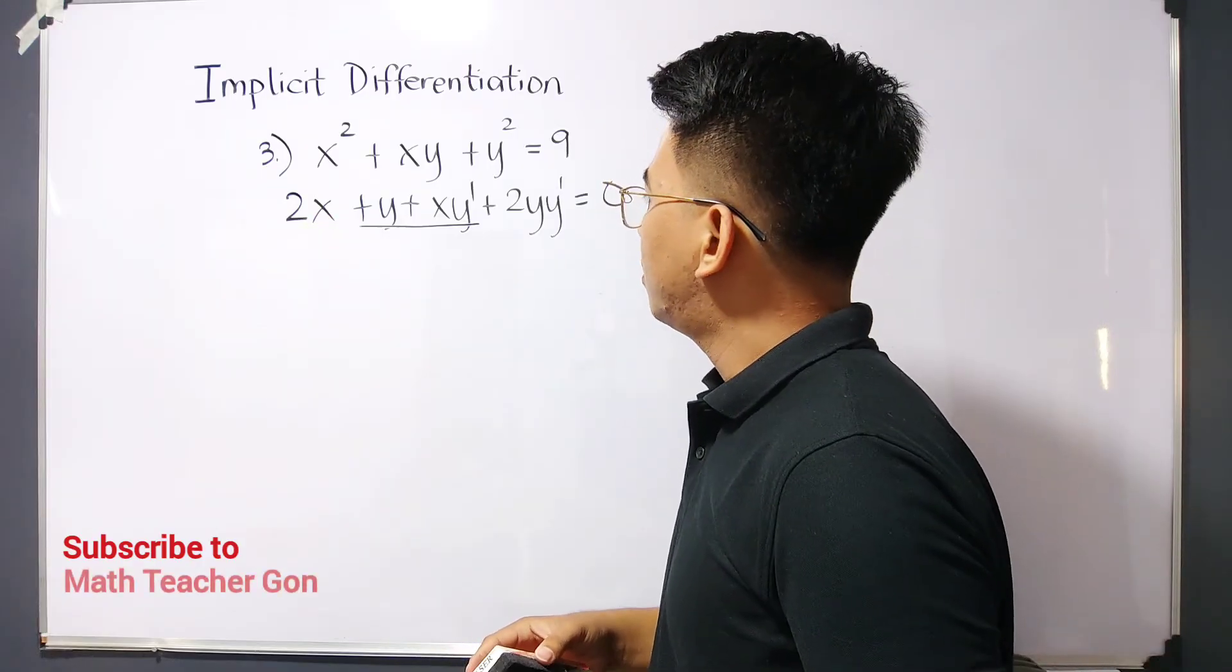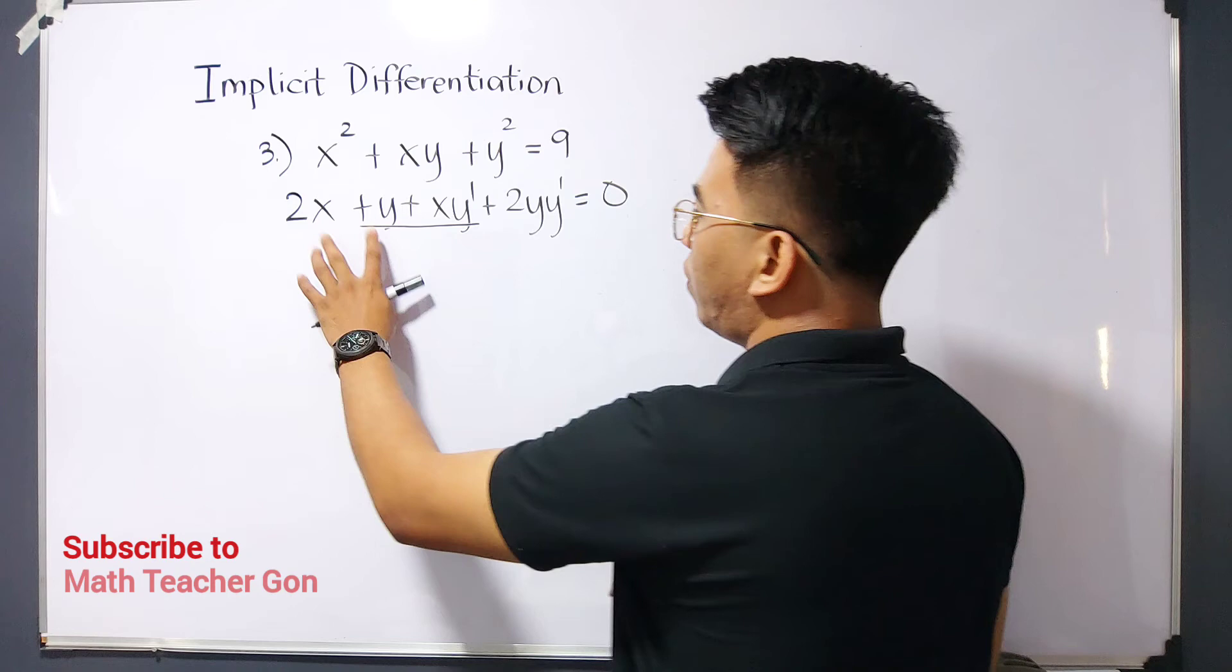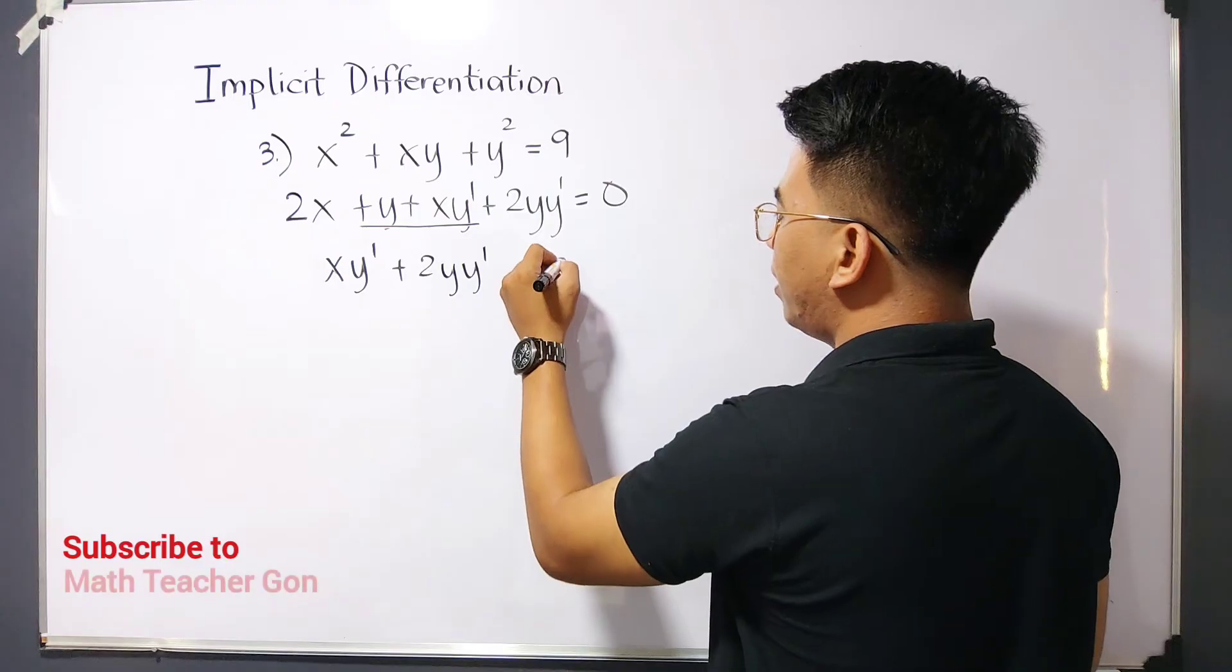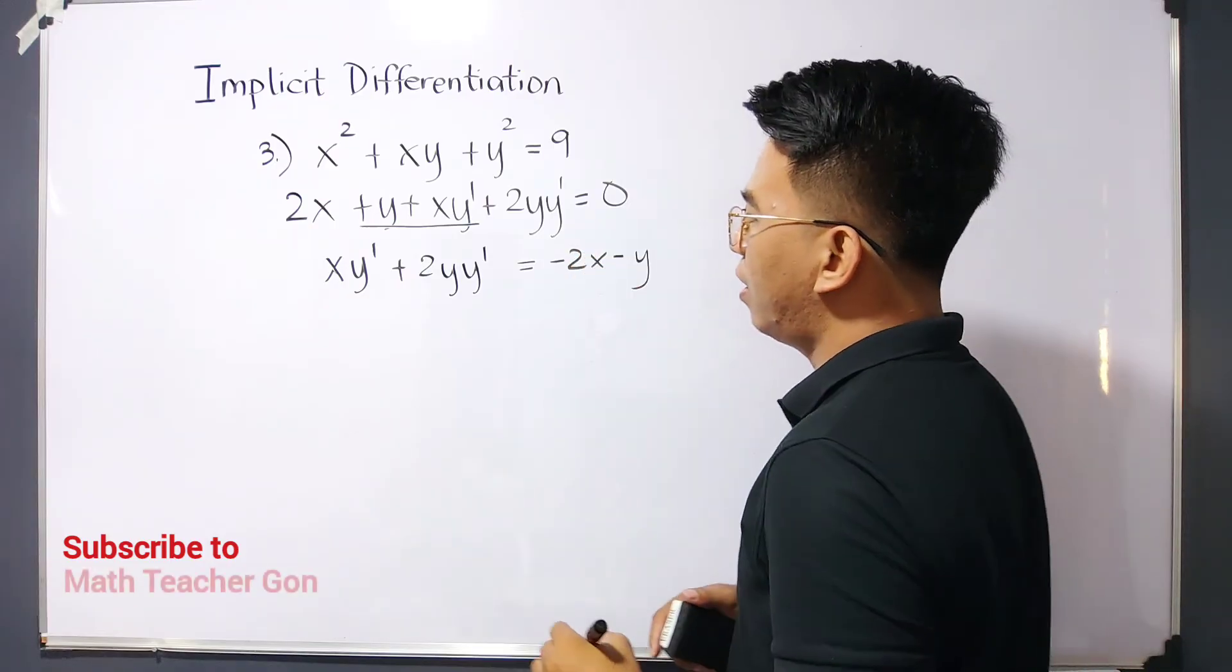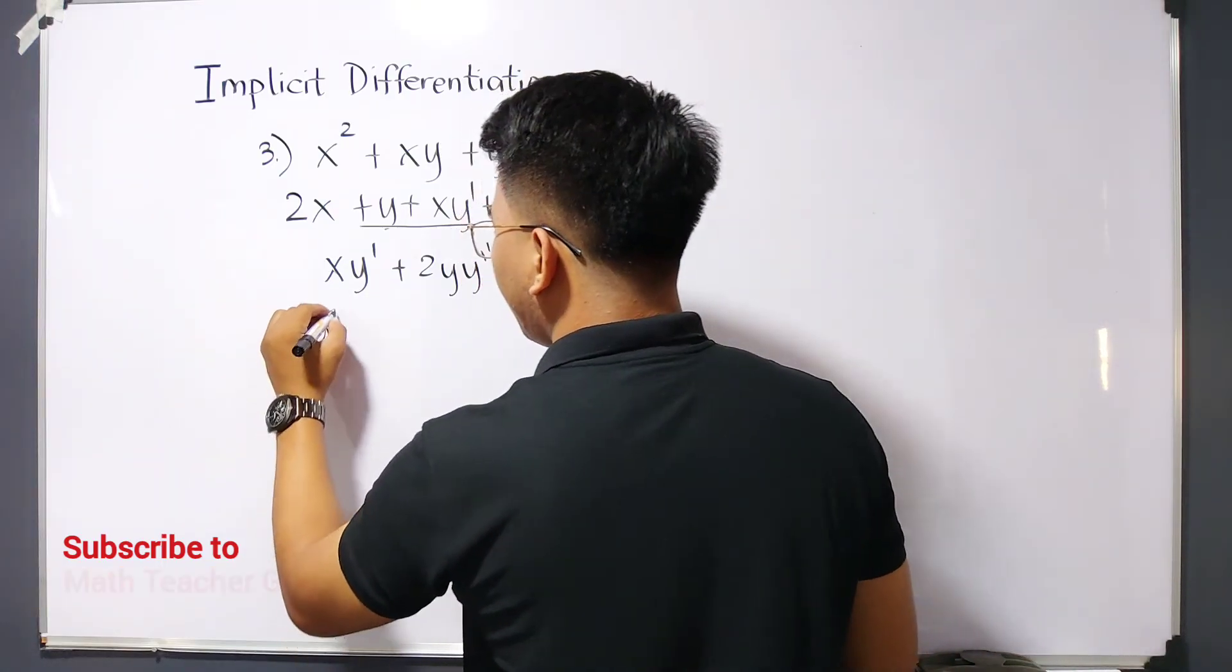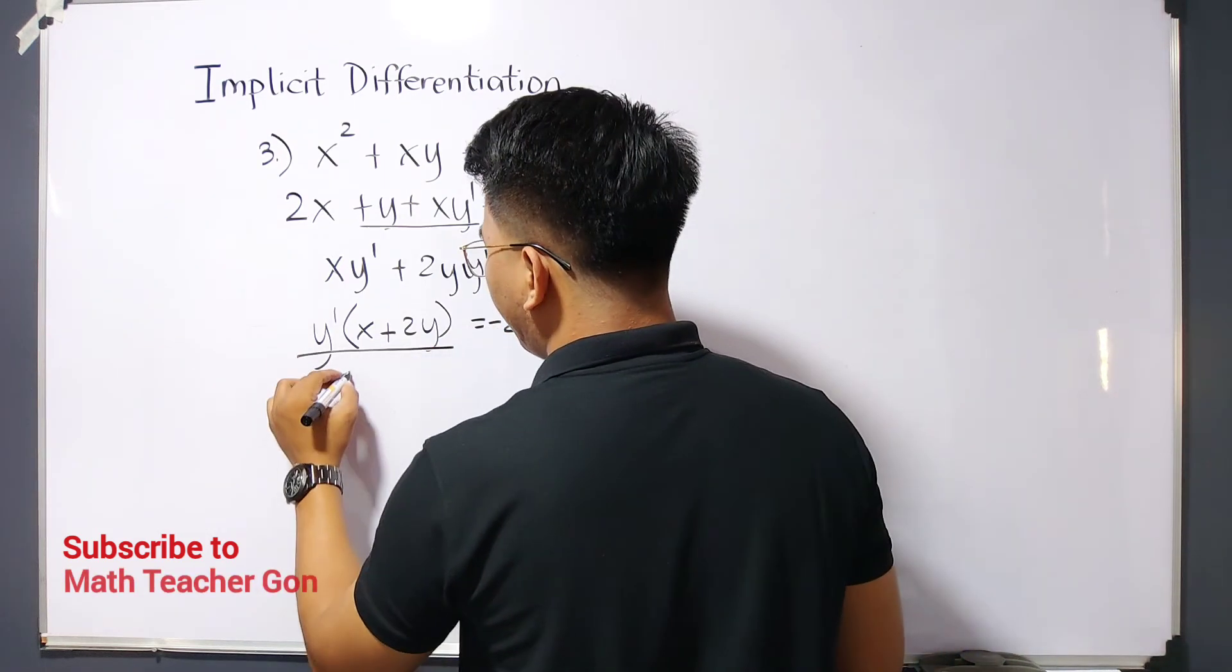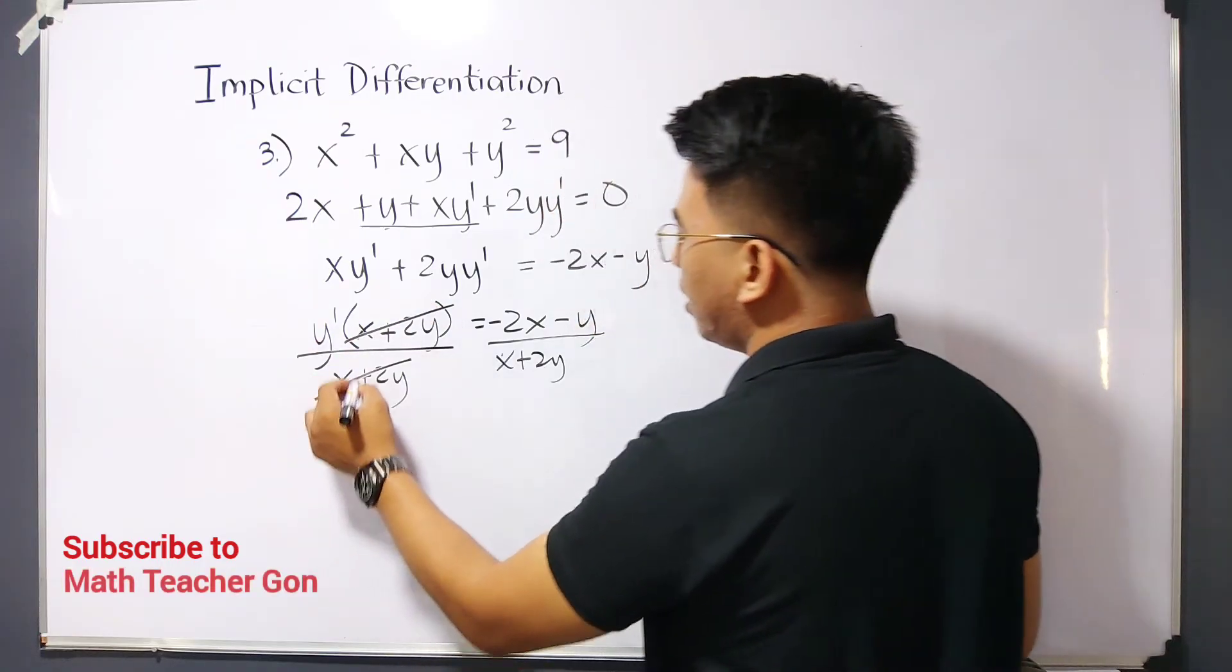Since we already have the y prime terms, our target now is to isolate y prime. First, we need to transpose 2x and y to the other side. It will become xy prime plus 2y y prime equals negative 2x minus y. To finally isolate y prime, we will factor out y prime. It becomes y prime times (x plus 2y), where what's in the parentheses will be our divisor. We will divide both sides by (x plus 2y). We can cancel out this one and this one, and we already have y prime isolated.